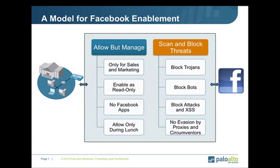That probably begs the question: what do we do about it? How do we take this application that has business value and isn't going away, and enable it in a way that aligns with our security policy? First and foremost, we need to be able to recognize it. Palo Alto Networks really excels at this — the ability to look at traffic, understand what the application is, and put granular controls and policies around it. Our choice doesn't have to be block or allow everything. We can say allow, but only for the sales and marketing team that needs Facebook for company business, or allow it as a read-only application — don't let people post, just let them check status. We can also allow certain functions, like allowing Facebook but not Facebook apps, so people aren't spending their entire day playing games.